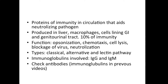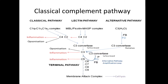The classical pathway is the only one of these that is part of adaptive immunity, and we know this because it has an antibody involved. An antibody takes a week or two to produce, and sometimes we don't have that time — that's when we have the lectin and alternative pathways.